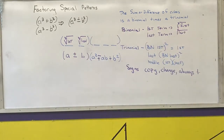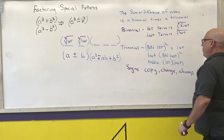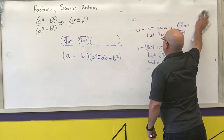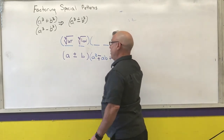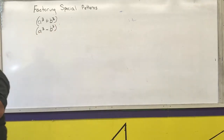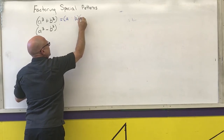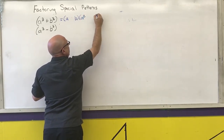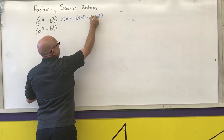I'm going to do several examples, and I recommend using the same words every time — say them out loud or in your head: cube root of the first, cube root of the last, that number squared, that number squared, that product — copy, change, always positive.